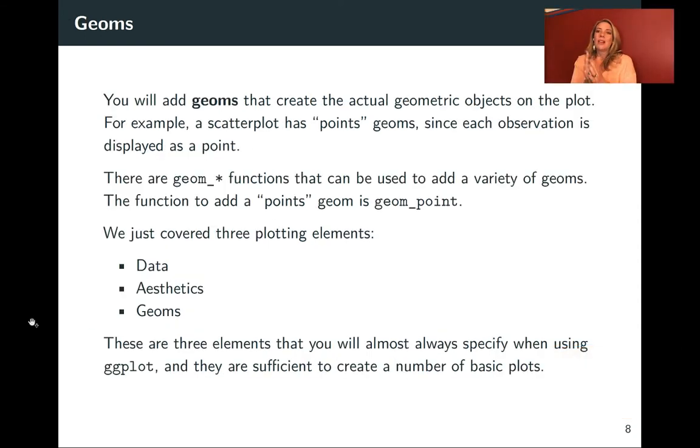So those are the first two elements, the data and the aesthetics. And then the third one is the geoms. These are the actual things that go on the plot. They're the geometric objects that you end up plotting. There are a number of geom functions that you can use to add these on. We'll start by looking at one called geom_point and that will add points to the plot. But then later in this lecture and then in some of the other videos for this chapter, we'll look at some other geoms we can use as well.